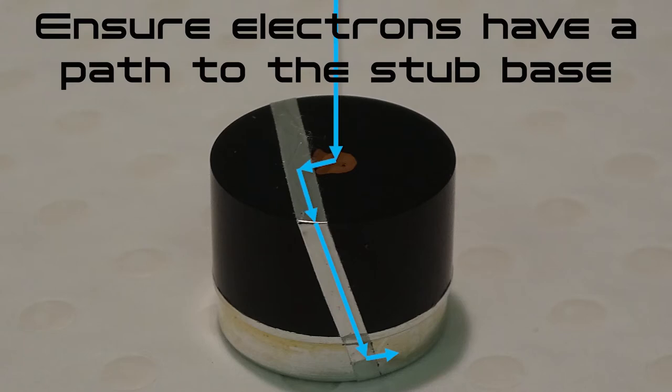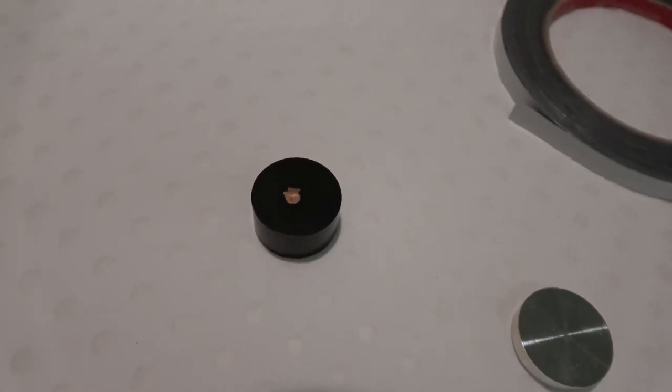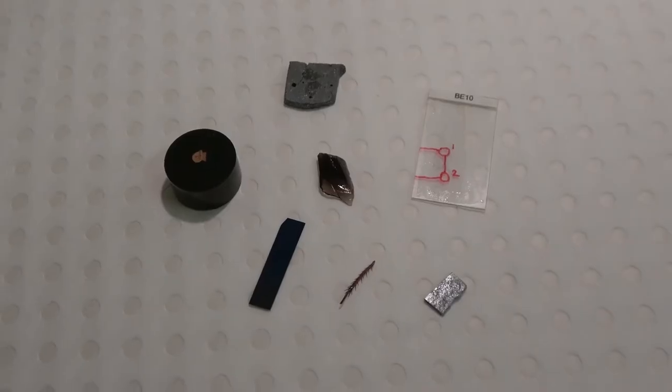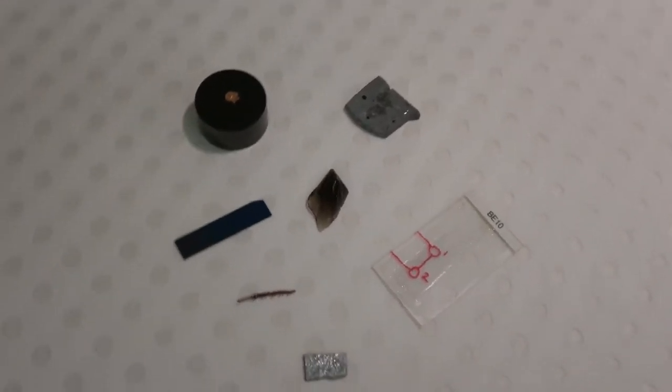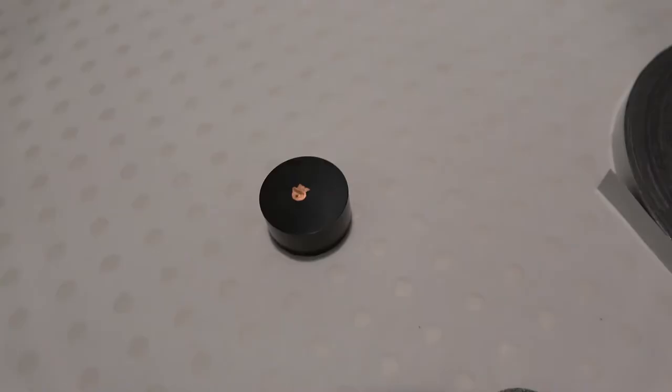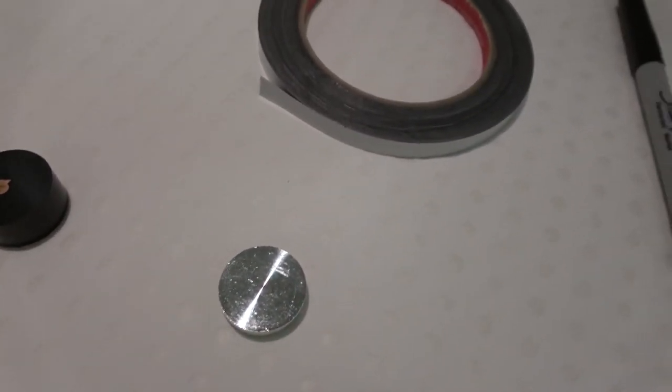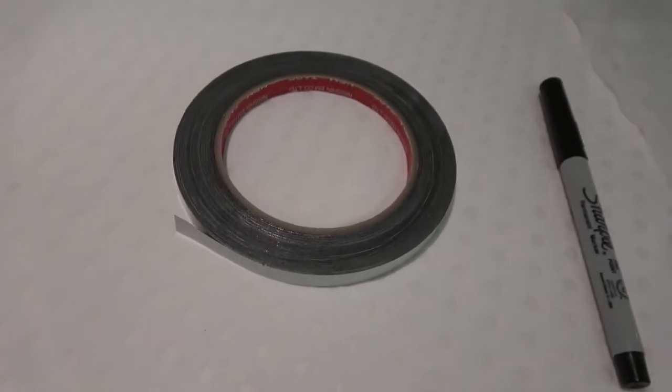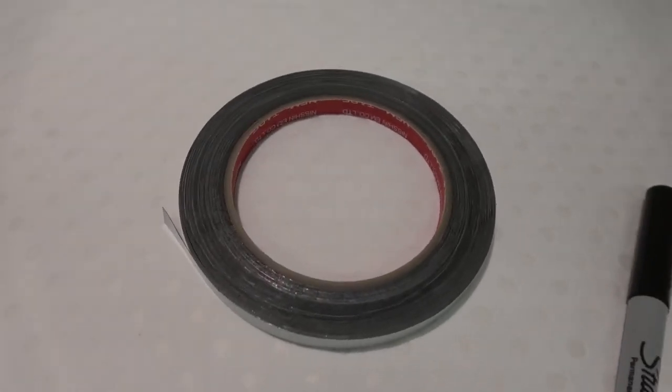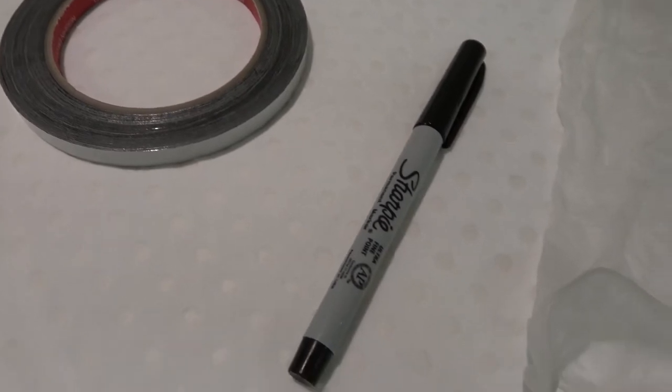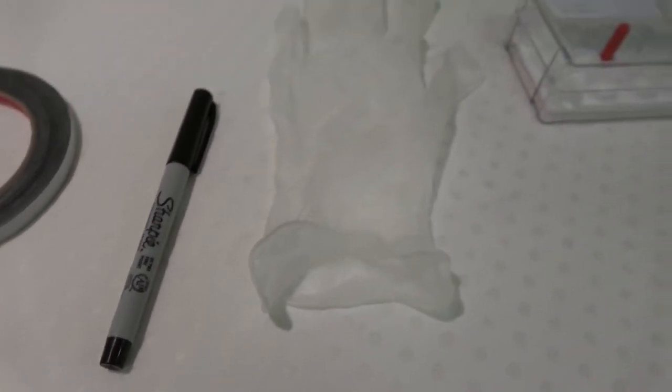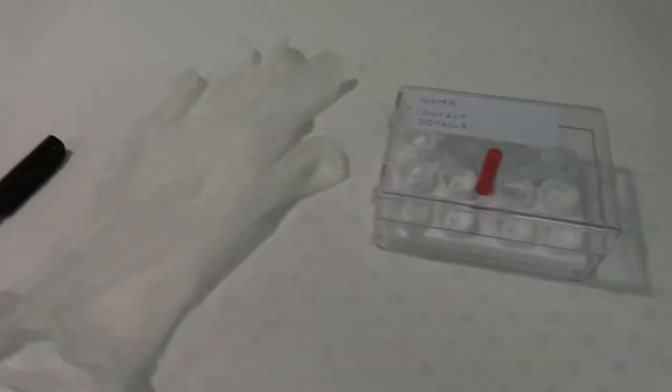Materials: a sample or piece of sample – use the smallest piece possible that you can easily manipulate and that contains your features of interest. An SEM stub, double-sided adhesive – at the EMU we provide users with double-sided conductive carbon tape. A fine permanent marker, gloves, and a SEM sample storage box.